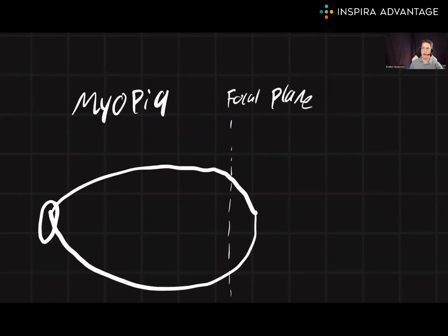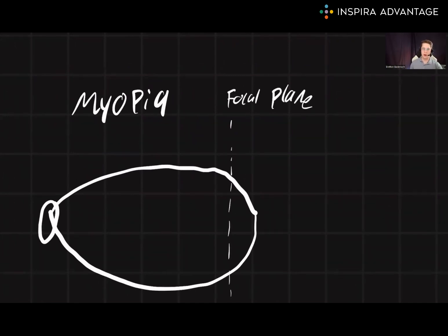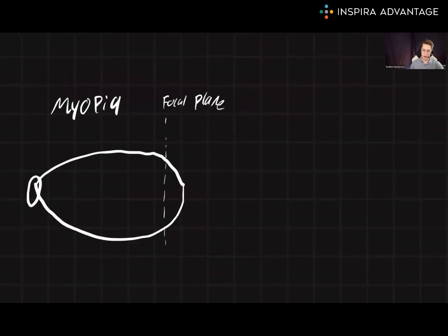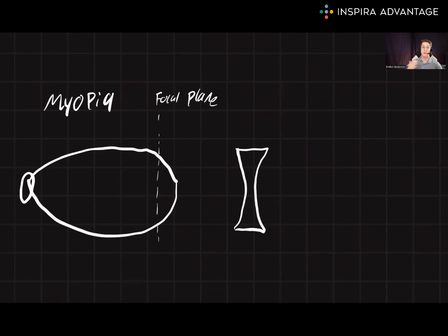To correct this, we need to move the focal plane backwards onto the retina. This can be done by using a simple diverging lens. The way that diverging lenses are often showed on the MCAT are like this. A diverging lens will diverge the light, so that way the focal plane moves back onto the retina where it should be.